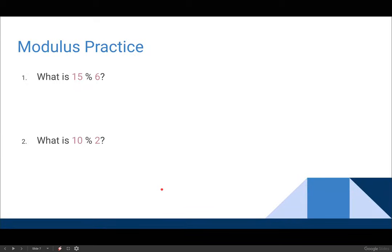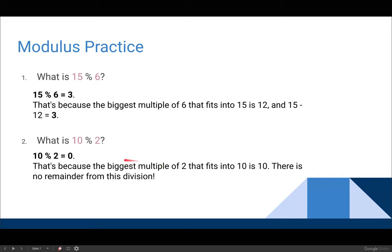So let's practice doing some modulus. What is 15 mod 6? 3. 3. Why is it 3? Because 6 can go into 15 2 times is 12, and 15 minus 12 is 3. Absolutely correct. So the biggest multiple of 6 that we can fit into 15 is 12, like you said. 15 minus 12 is 3. All right. And then what's 10 mod 2? Zero. Zero. Correct. Because those numbers divide evenly. 2 goes into 10 5 times with nothing left over. So our remainder is zero.